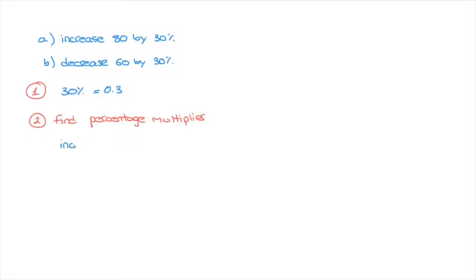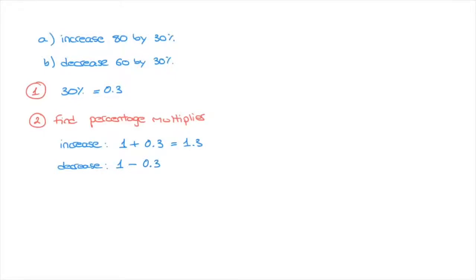For an increase of 30%, the percentage multiplier is equal to 1 plus the number we found in step one, so that's 1 plus 0.3, which equals 1.3. For a percentage decrease, the multiplier is 1 minus the number we found in step one, so that's 1 minus 0.3, which equals 0.7. For percentage increases we add the number to 1, and for percentage decreases we subtract the number.